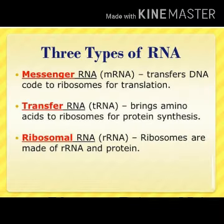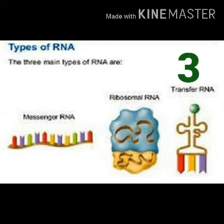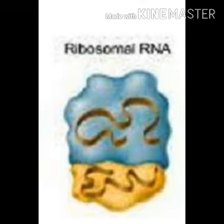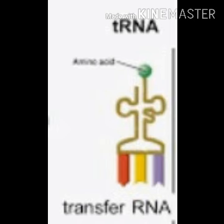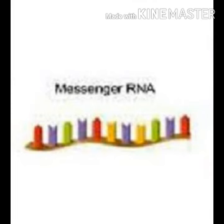There are three types of RNA. First is mRNA, where M stands for messenger. Second is rRNA, where R stands for ribosomal RNA. Third is tRNA, where T stands for transfer RNA. Messenger RNA consists of codons — codons of amino acids, or you can say the message for making proteins. Amino acid is the basic unit of protein for the process of protein synthesis, just as the cell is the basic unit of our body.